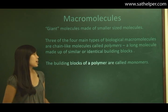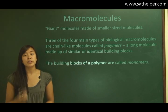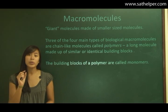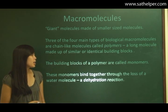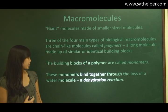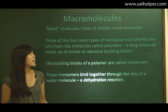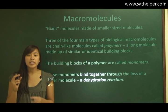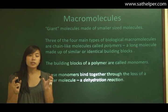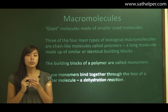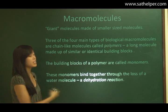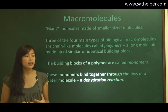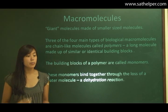The building blocks of a polymer are called monomers — think of the individual beads, those are the monomers of a necklace. These monomers bind together through the loss of a water molecule in a dehydration reaction. Each of these building blocks goes through a synthesis reaction where you add two together and lose a water molecule in the process.